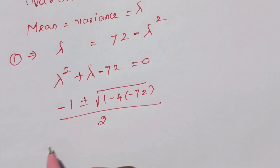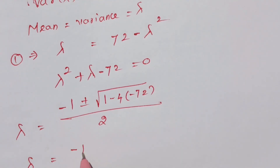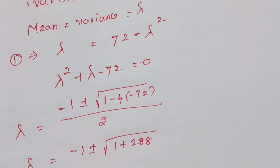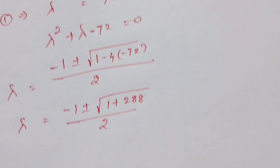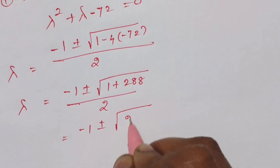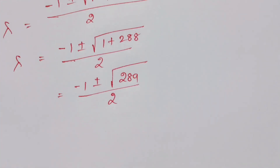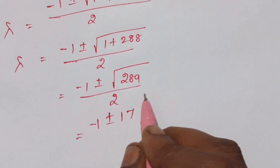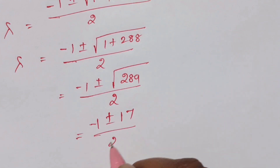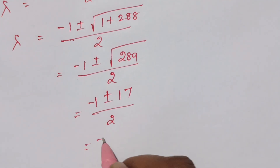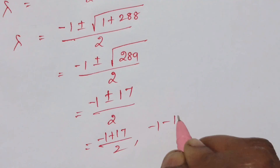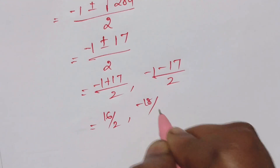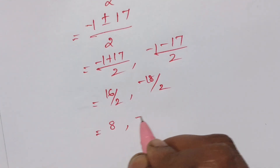That denominator is 2. Lambda equals minus 1 plus or minus root of 1 plus 288, divided by 2. Now 4 times 72 is 288. So, minus 1 plus or minus root of 289, divided by 2. The square root of 289 equals 17. We get two values: minus 1 plus 17 over 2 equals 16 over 2 equals 8, and minus 1 minus 17 over 2 equals minus 18 over 2 equals minus 9. So lambda is 8 or minus 9.